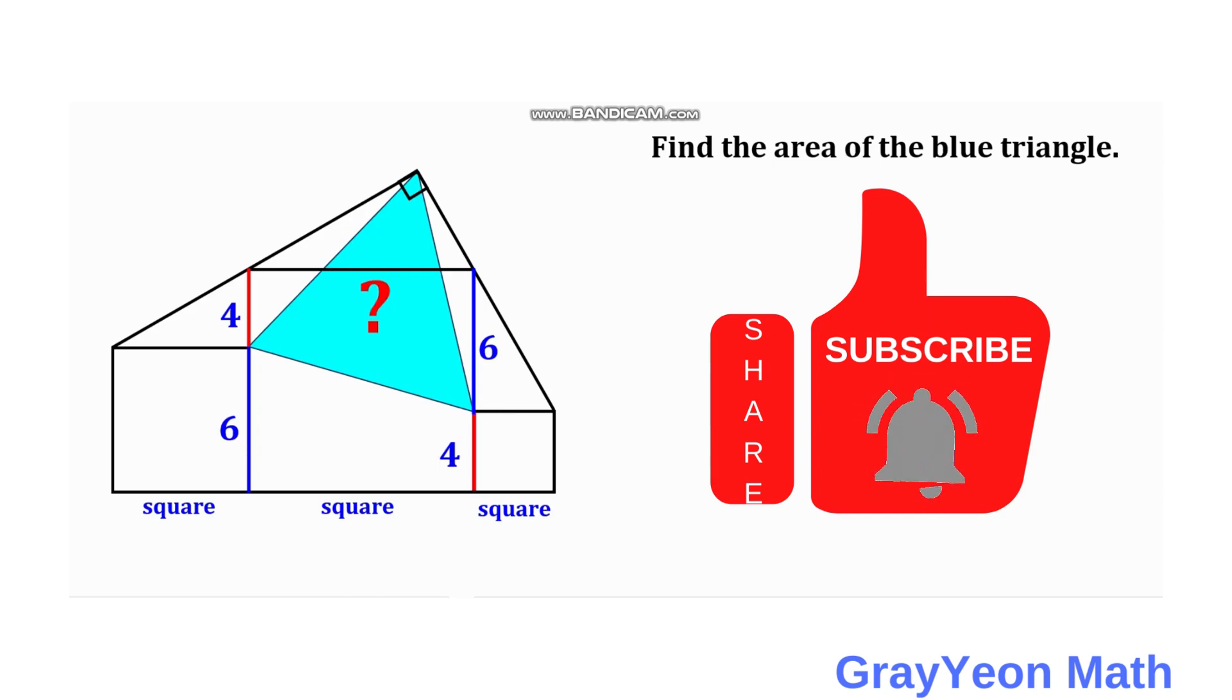Welcome to GrayonMath. We are asked to solve this problem. We have a set of squares. A square with a side of 6 and a square with a side of 4 for the smallest and a bigger square.